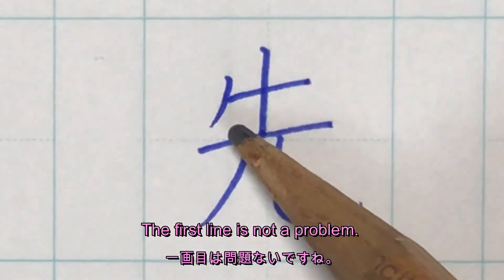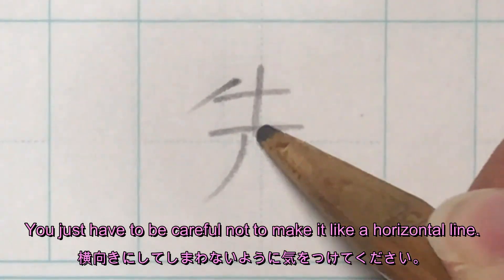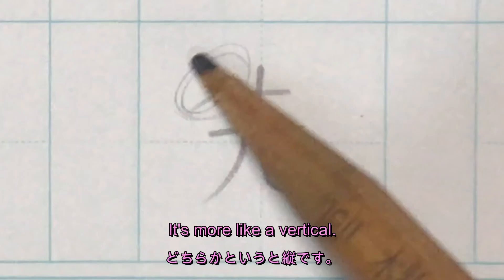The first line is not a problem. You just have to be careful not to make it like a horizontal line like this. It's more like a vertical.